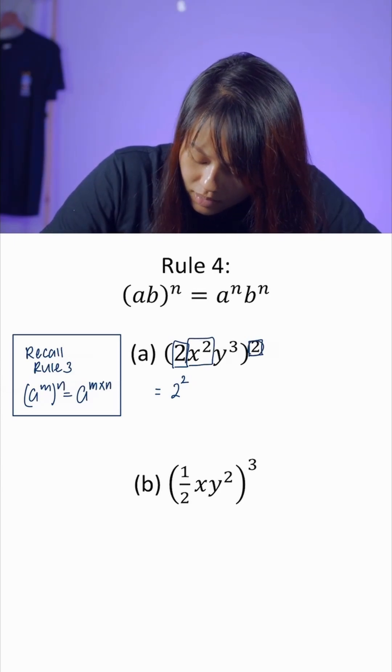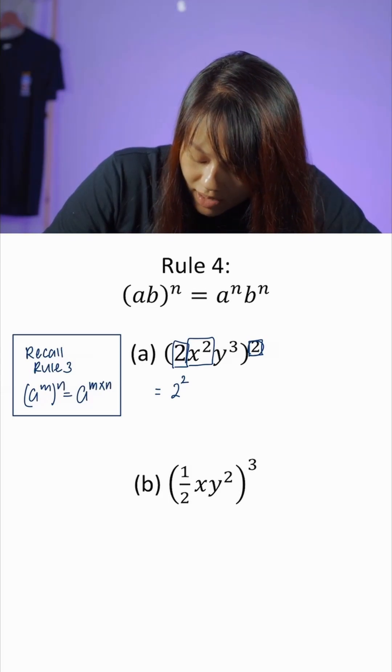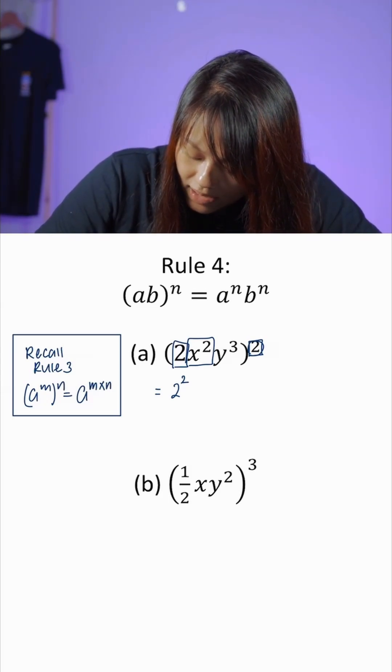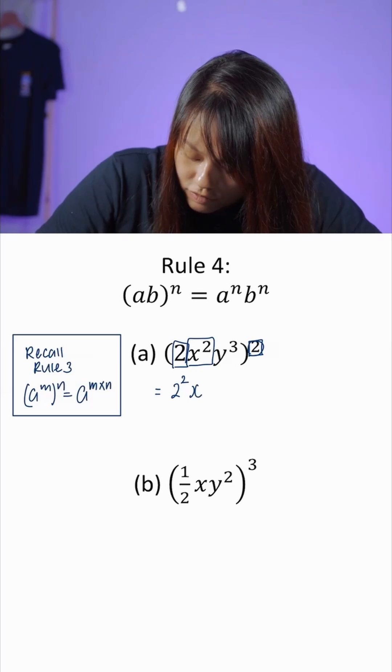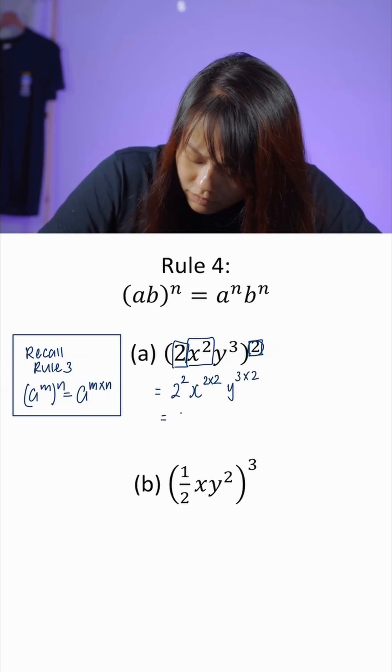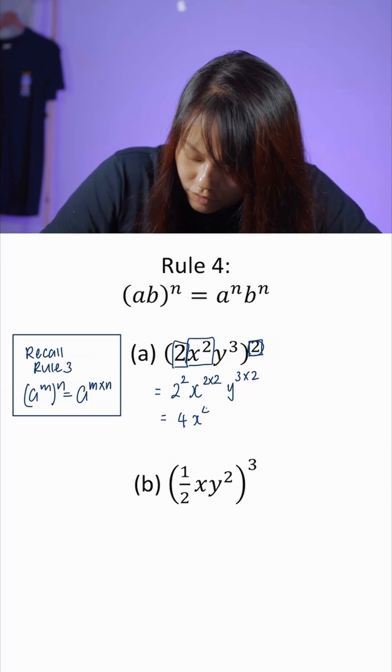Recall from rule number 3: (a^m)^n gives you a^(m×n). For x we'll get x^(2×2). For y we'll get y^(3×2). Simplifying this expression we get 4x^4y^6.